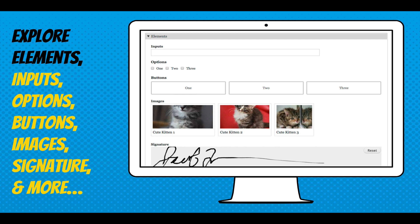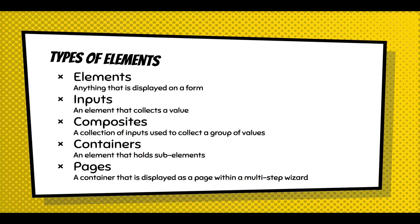Just to get everyone on the same page: an element is anything displayed on a form. An input is an element that collects a value. A composite is a collection of inputs used to collect a group of values. You can group inputs and elements within a container. A details element or field set puts elements together. Pages are what we use to create multi-step wizards when you break up the form into individual pages.